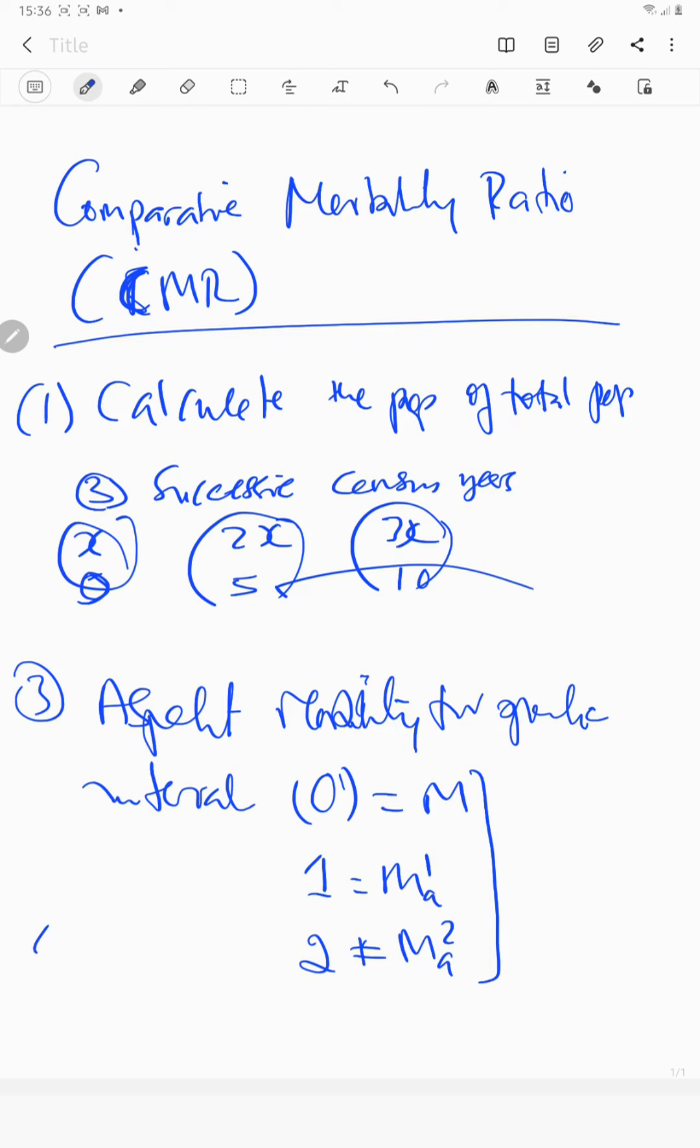Then what happens is the rest is to multiply the weights. Number four, or number five, is now to multiply the weight wa by the age-specific mortality, and then you sum the values. You can calculate wa multiplied by ma, then sum the value to get the weight corresponding value.